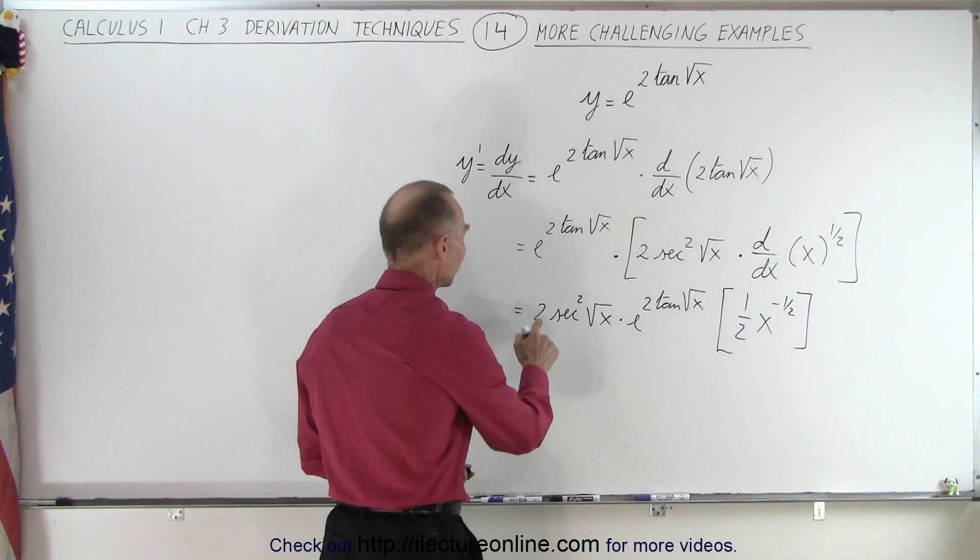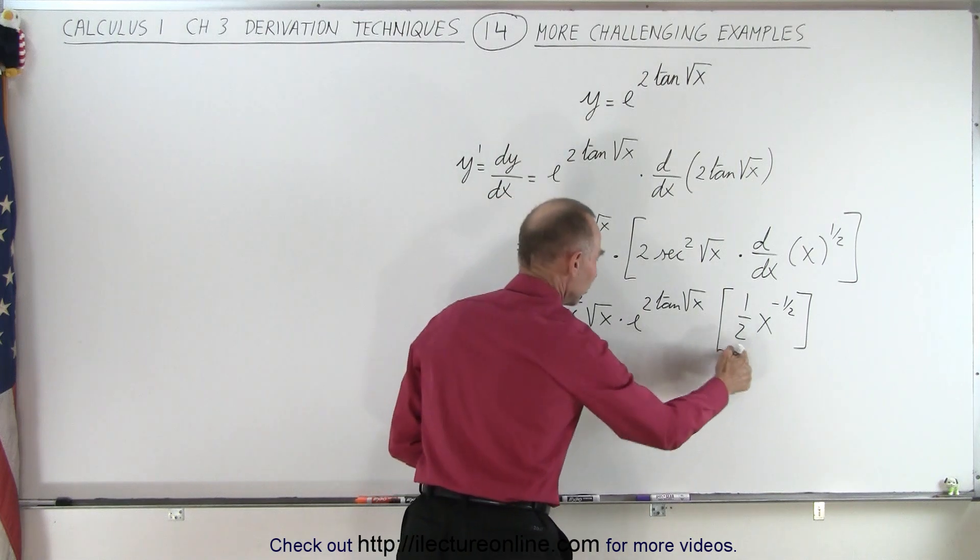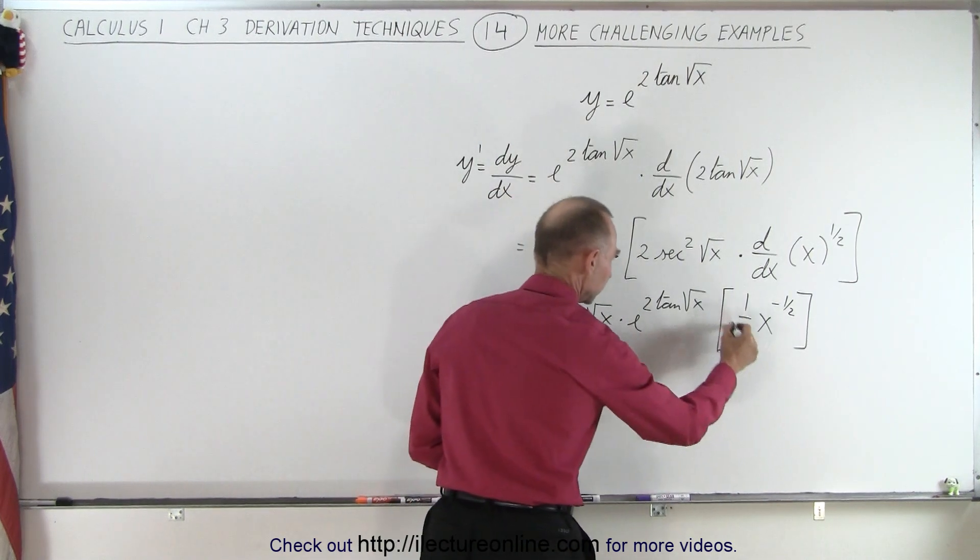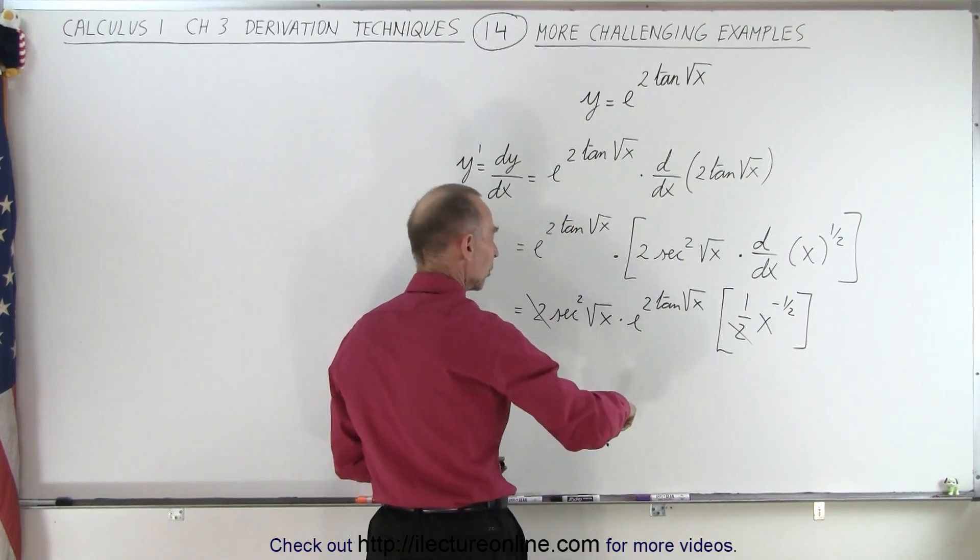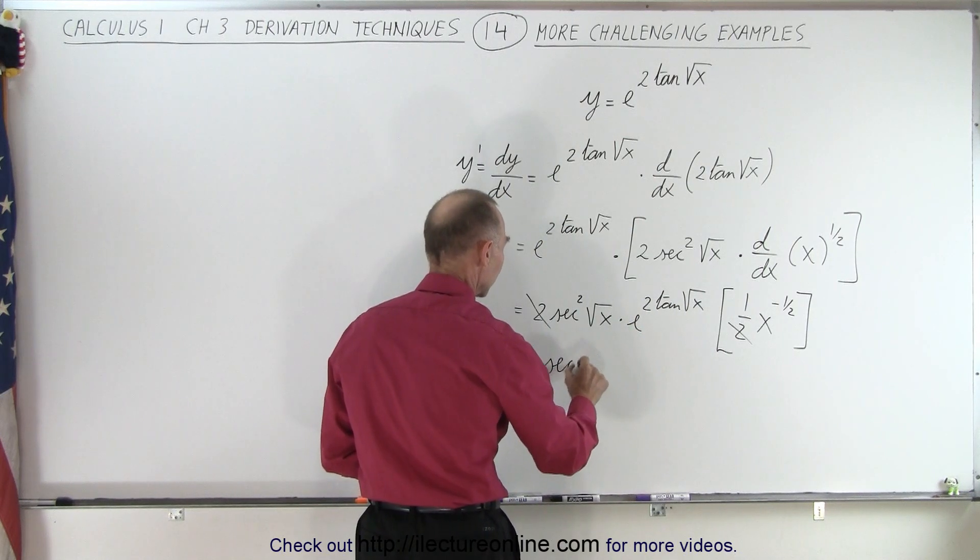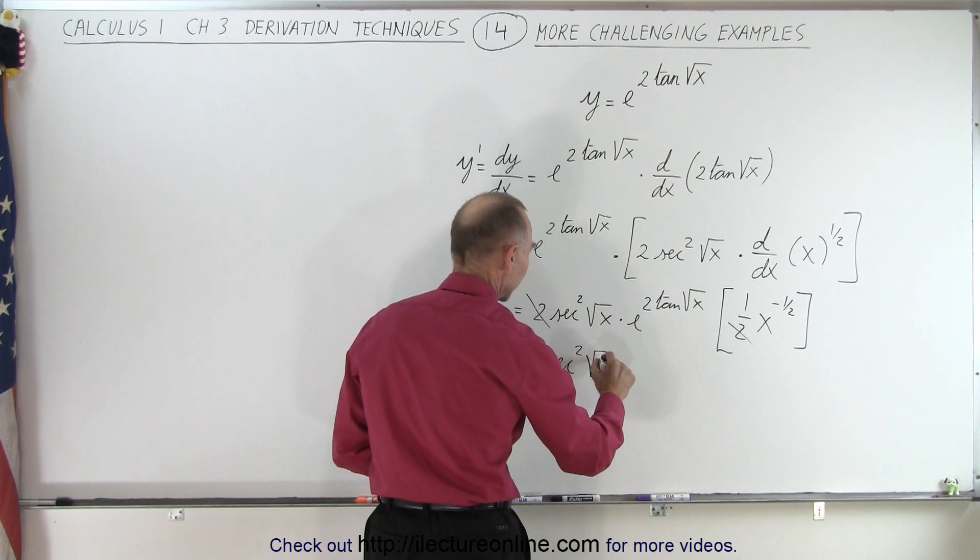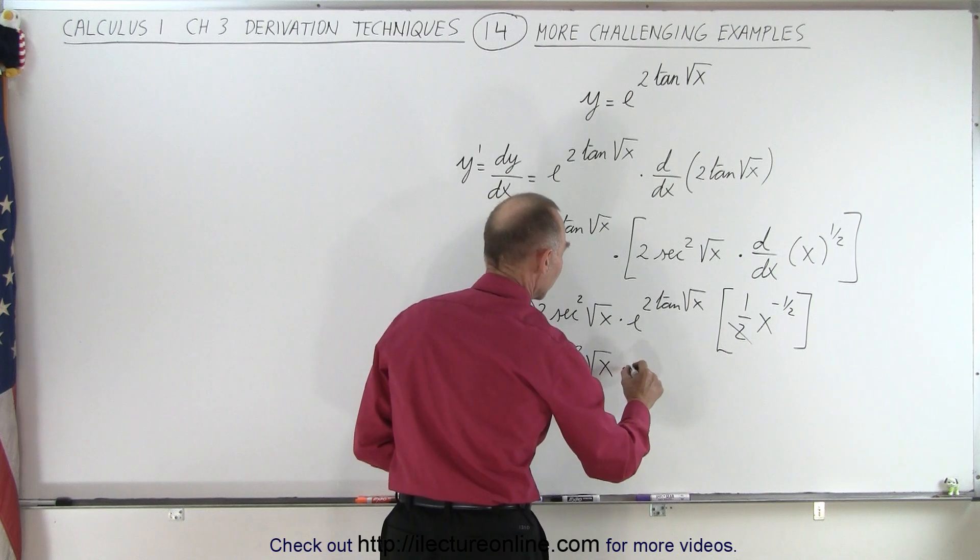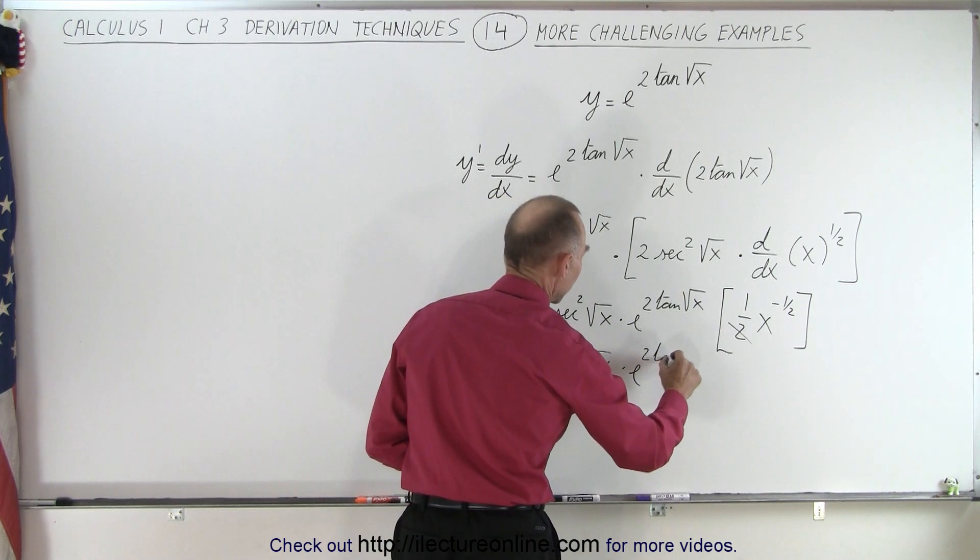And then we realize we have 2 times this divided by 2, so the 2's cancel. And the x to the 1 half can go in the denominator. So this becomes equal to the secant squared of the square root of x, times e to the 2 tangent.